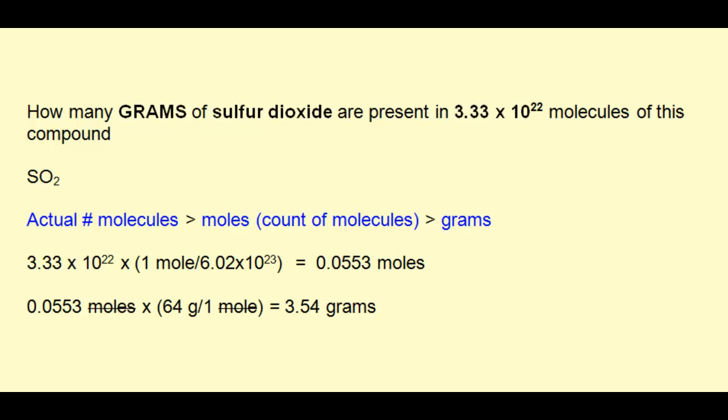Finally, we take 0.0553 moles and multiply that by the molar weight of SO2, which is 64 grams per mole. 3.54 grams should make perfect sense because one mole equals 64 grams, and we only have 0.0553 moles. So logically, we're going to have much less than 64 grams.